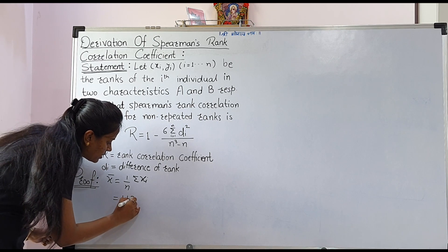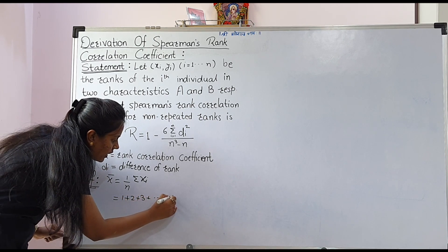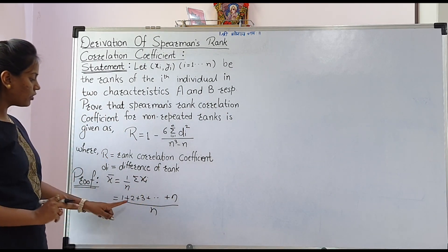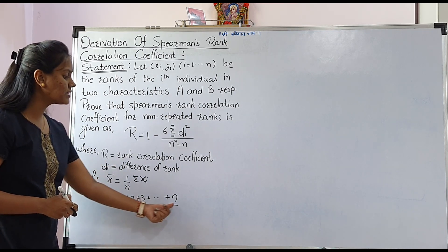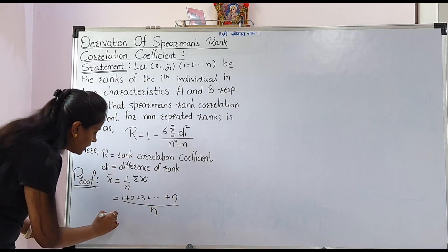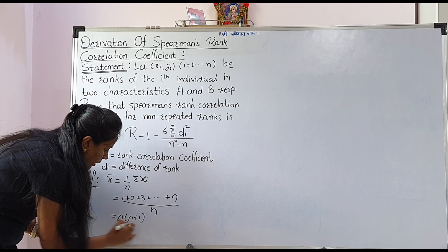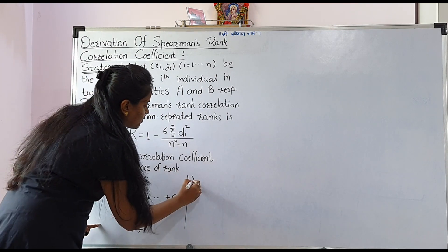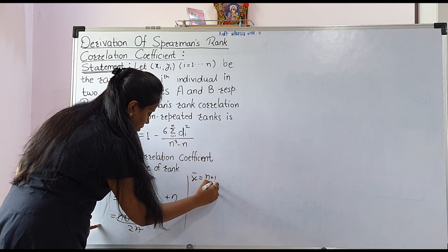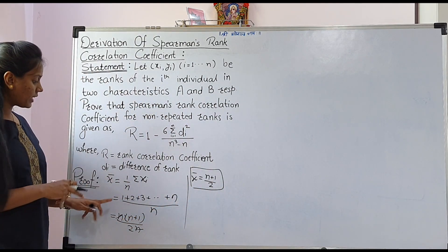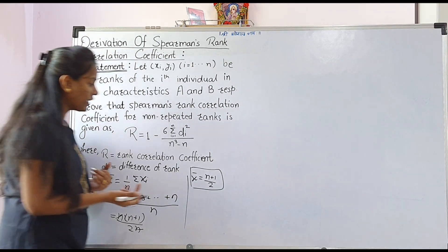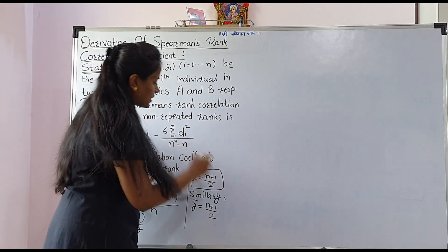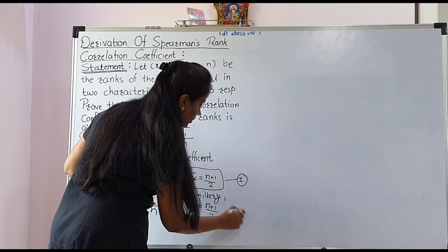So we consider it as (1 + 2 + 3 + … + n) / n. Here we have taken the sum of all the rankings. We know that the sum of the first n natural numbers is n(n+1)/2, and the n in the denominator cancels, so x̄ = (n+1)/2. Similarly, we get ȳ = (n+1)/2.